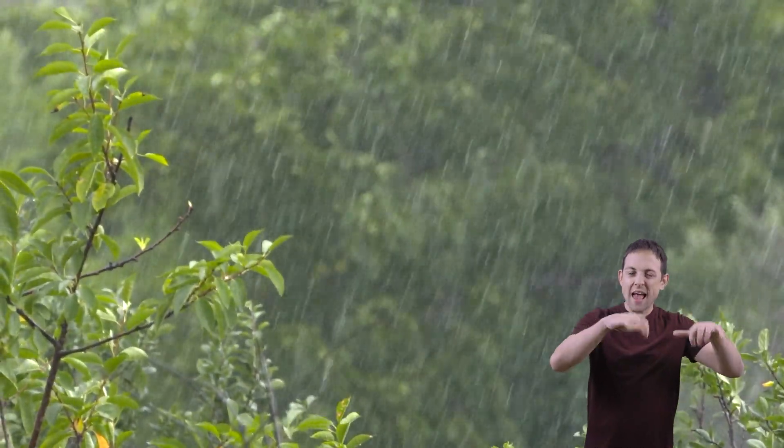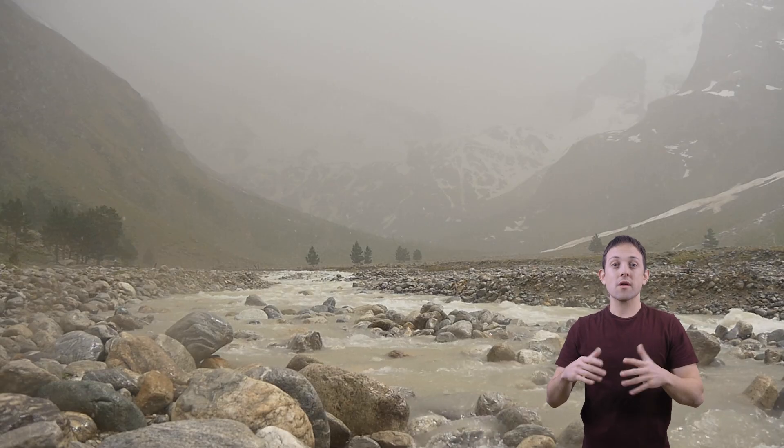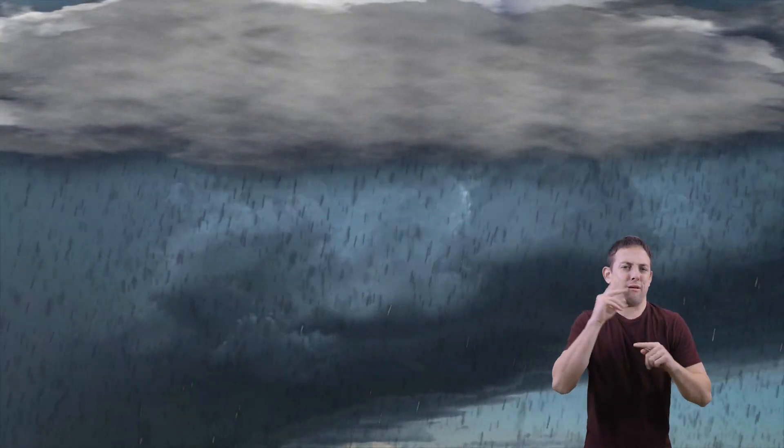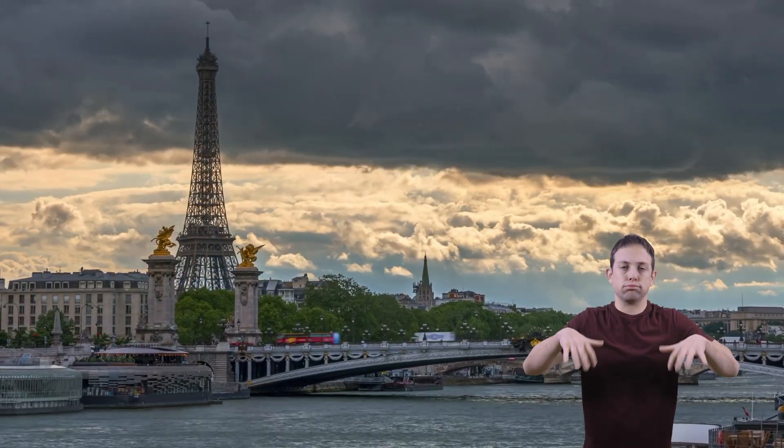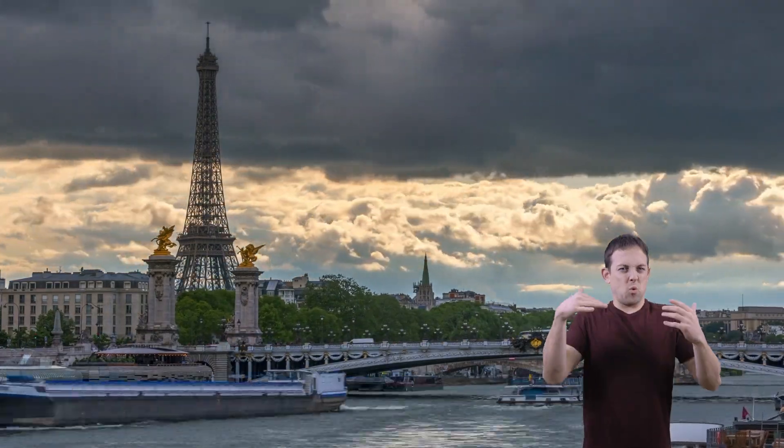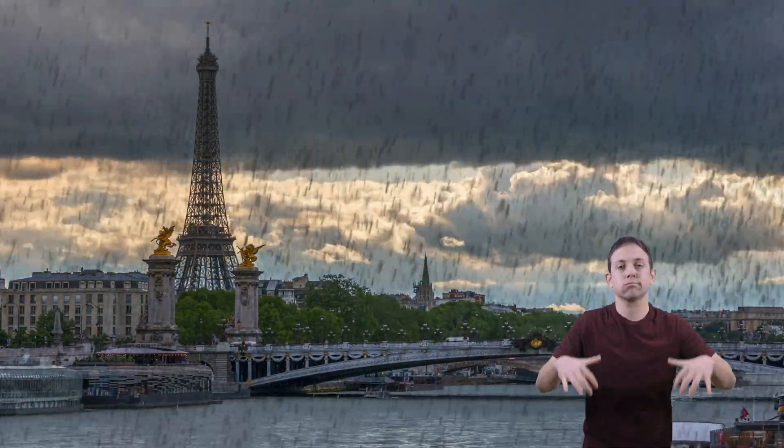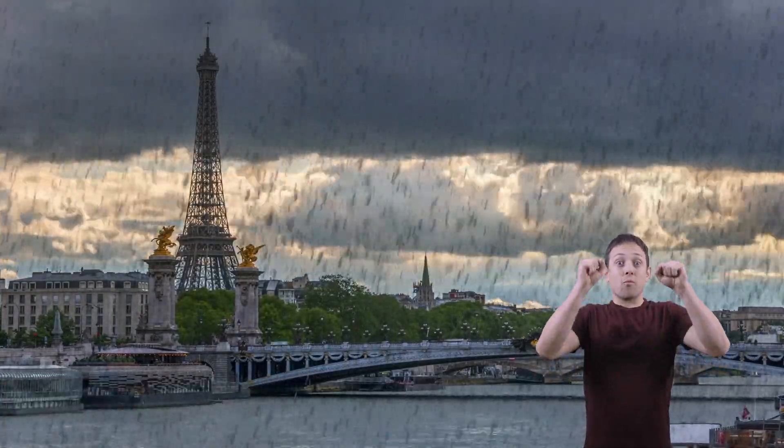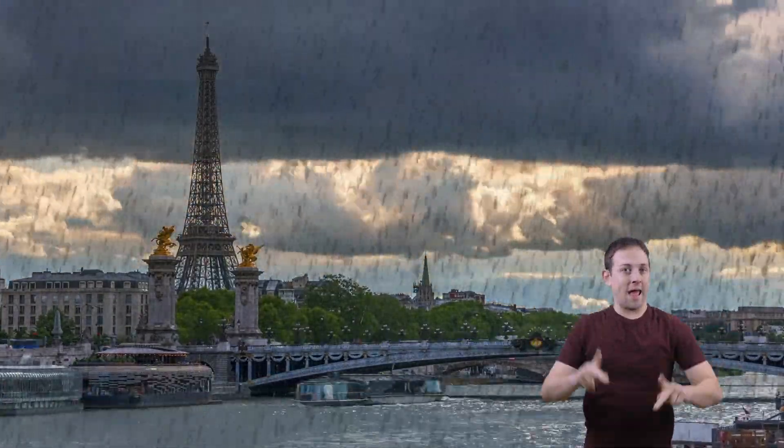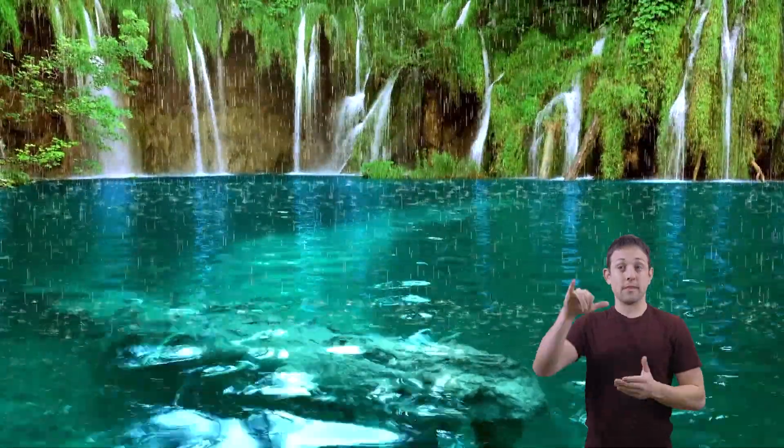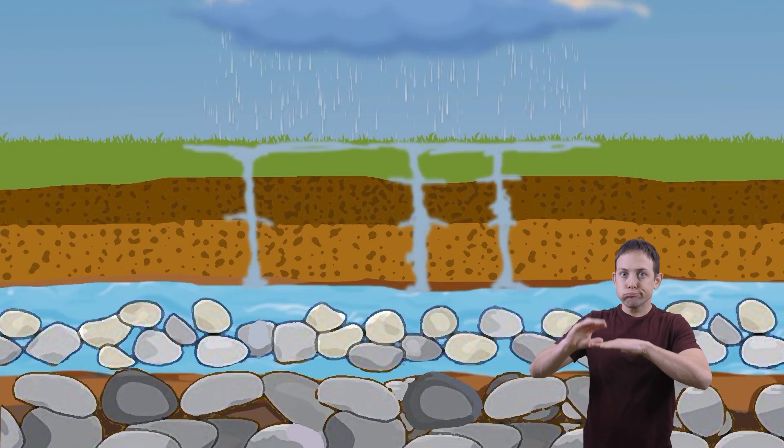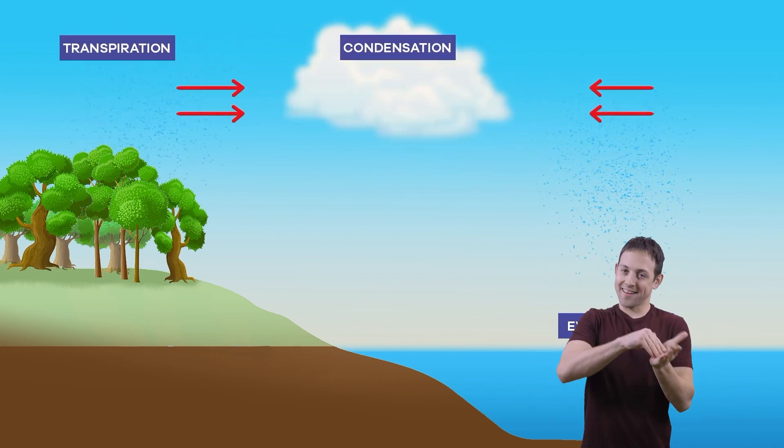Precipitation is rain, snow, sleet, or hail that falls to the ground. And it happens when the air can no longer hold the water that has been evaporated. As we mentioned before, when clouds get too heavy, it rains. And the evaporated water makes its way back down to the earth. This precipitation will gather in bodies of water or underground. And the whole water cycle starts again.